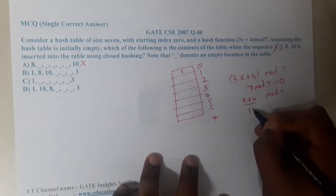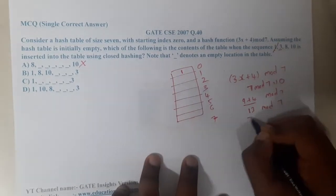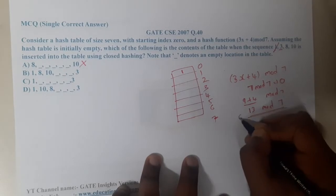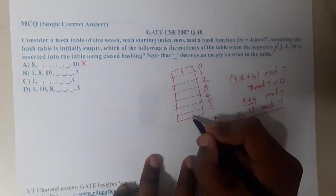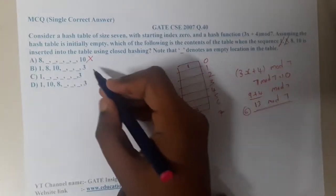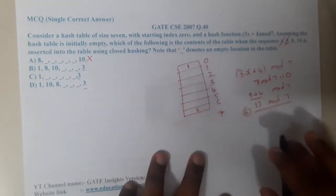13 mod 7 gives 6 as the result. At the sixth location, at last, you will push the 3. All 3 options have 3 at the end, so it is satisfied.